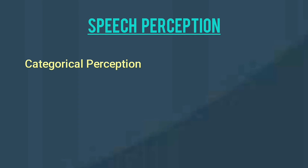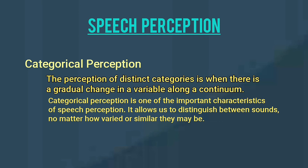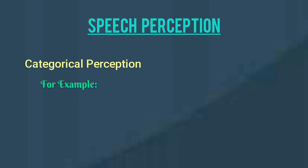Categorical perception. The perception of distinct categories is when there is a gradual change in a variable along the continuum. Categorical perception is one of the important characteristics of speech perception. It allows us to distinguish between sounds, no matter how varied or similar they may be.